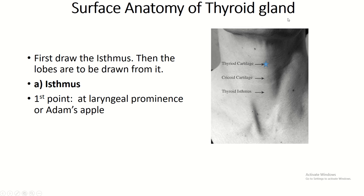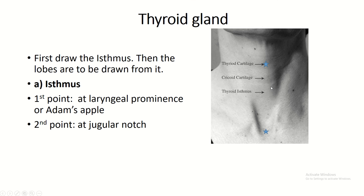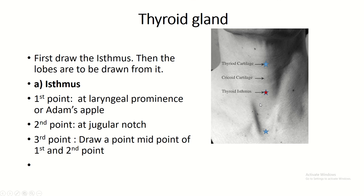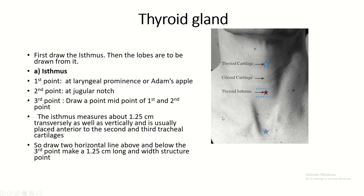Surface anatomy of the thyroid gland. The thyroid gland has two lobes connected by an isthmus. For the surface anatomy of the isthmus: the first point is the laryngeal prominence, the second point is the jugular notch, and the third point is in between the first and second points. The isthmus measures 1.2 cm both vertically and transversely, so draw two lines above and below the third point.